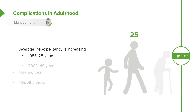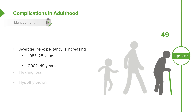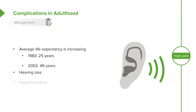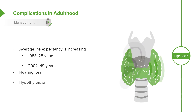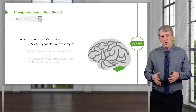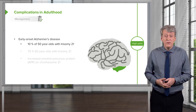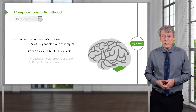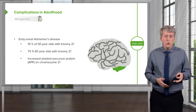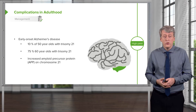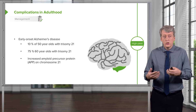Patients with Down syndrome have a longer and longer life expectancy in the United States. As recently as 1983, the average life expectancy was 25, and by 2002 it was 49, largely due to better standard therapies for complications. We must attend to hearing loss with hearing aids or implants, and treat hypothyroidism aggressively. One important adult complication is early onset Alzheimer's disease, occurring in about 10% of 50-year-olds and 75% of 60-year-olds with trisomy 21. This is because the amyloid precursor protein gene (APP) is located on chromosome 21, giving them a genetic predisposition to early onset Alzheimer's.